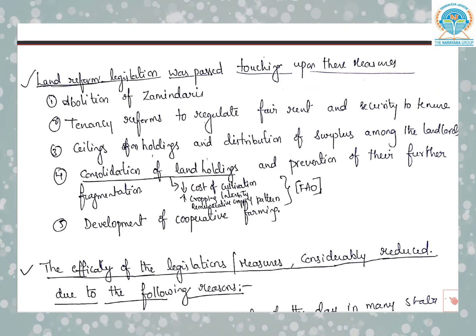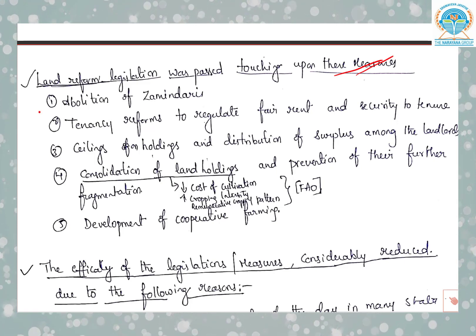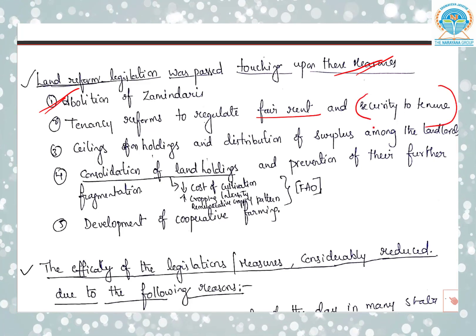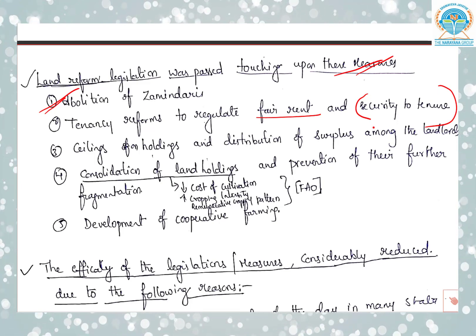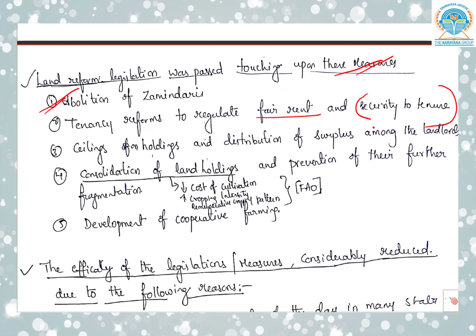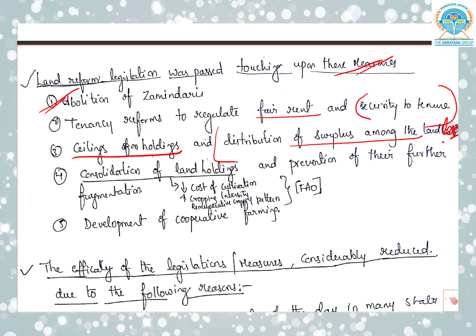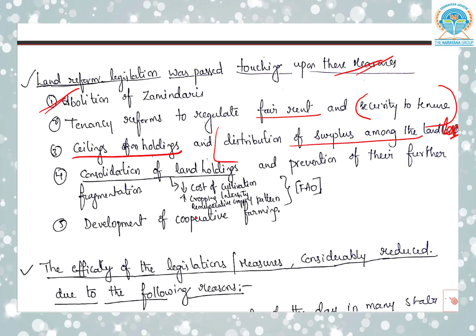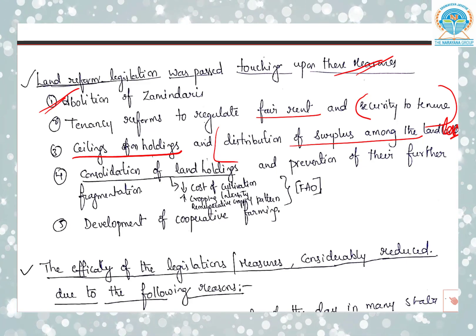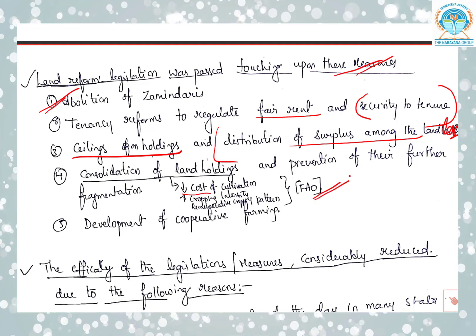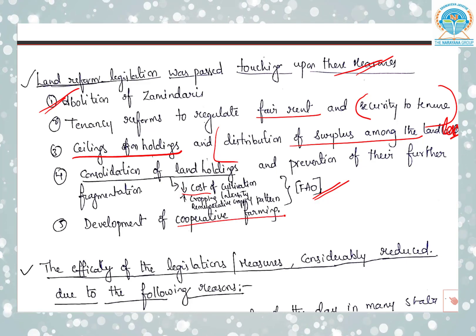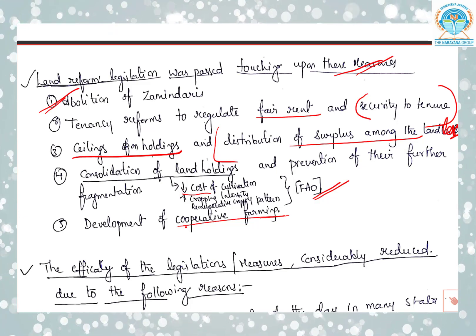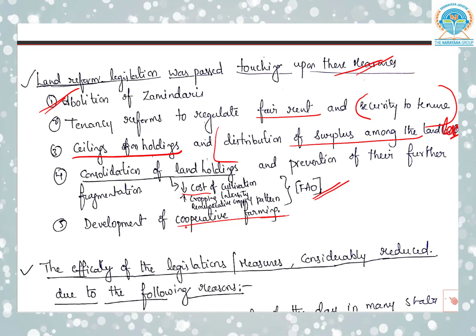Land reform legislations were passed touching upon these measures: abolition of zamindaris; tenancy reforms to regulate fair rent and security of tenure; ceilings on land holdings and distribution of surplus among the landless; consolidation of land holdings and prevention of their further fragmentation — which, according to the Food and Agricultural Organization, improved cropping intensity and remunerative cropping patterns and decreased the cost of cultivation; and development of cooperative farming.